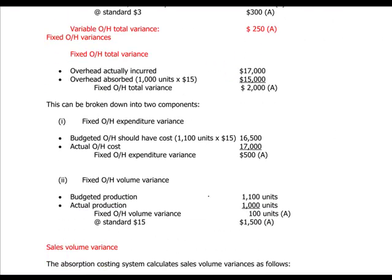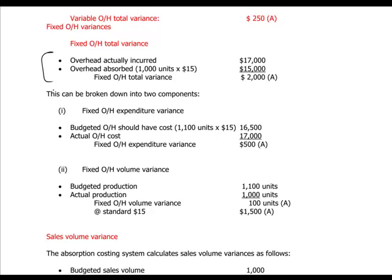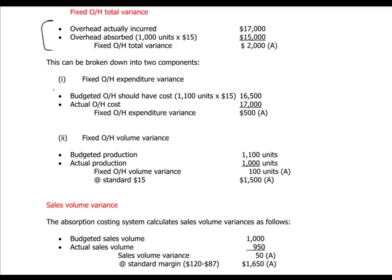For fixed overhead variances, note that they are computed on two sides: expenditure variance and volume variance. If you are using marginal costing, then you will only compute the total expenditure variance. If you are using absorption costing, however, you can compute both the expenditure variance and the volume variance, on the same basis as variable overheads.